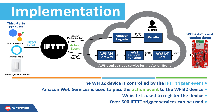A website is set up in the AWS Cloud for registering the devices to work with the IFTTT applets. There are over 500 IFTTT trigger services like Google Assistant, Alexa, and Wemo light switch that can be used.